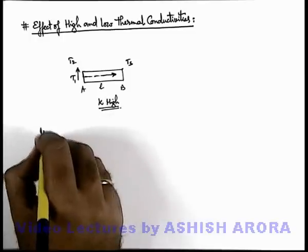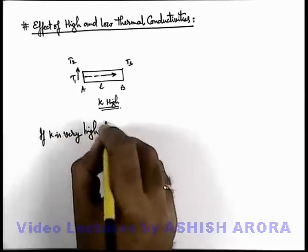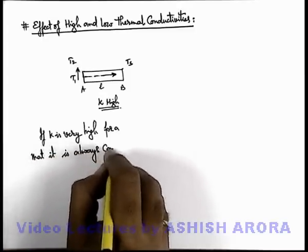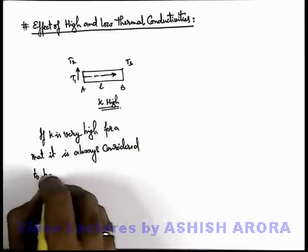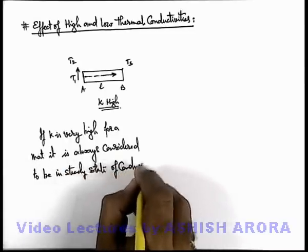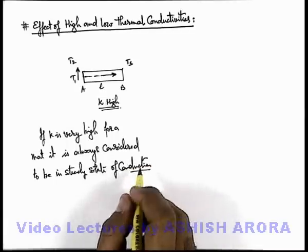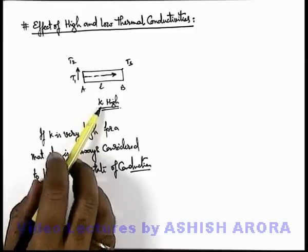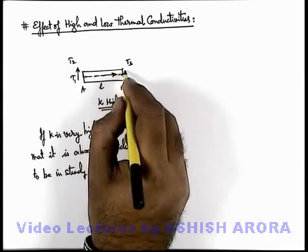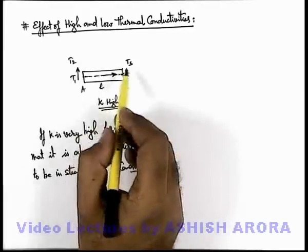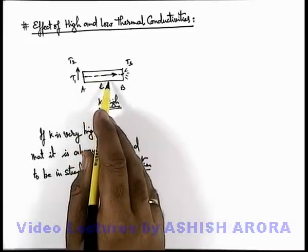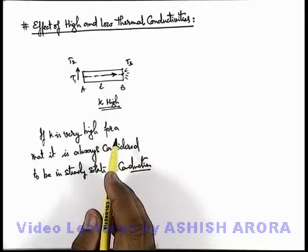So we can say if k is very high for a material, it is always considered to be in steady state of thermal conduction. Another thing we can say is that if a body has very high thermal conductivity, heat entering from one side will instantly flow and reach the other end, and will then be radiated or utilized by some other media in contact with end B. So when k is very high, the body absorbs very little heat and instantly transmits or conducts the heat through the material.